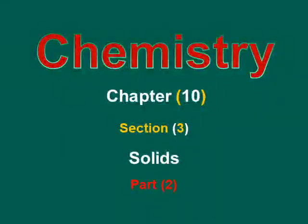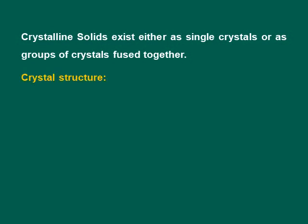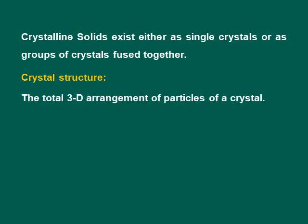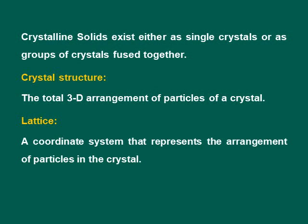We mentioned the two types of solids: crystalline solids and amorphous solids. Crystalline solids exist either as single crystals or as groups of crystals. Crystal structure is the total 3D arrangement of particles in a crystal. The particles of a solid are arranged in three dimensions, and this arrangement is called crystal structure. The lattice is the coordinate system that represents the repeating arrangement of points, like a network.